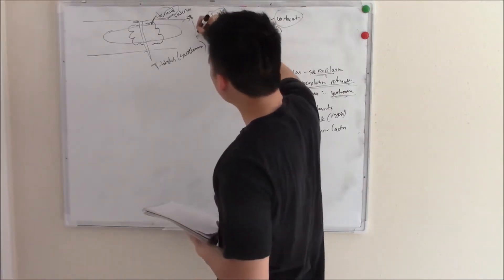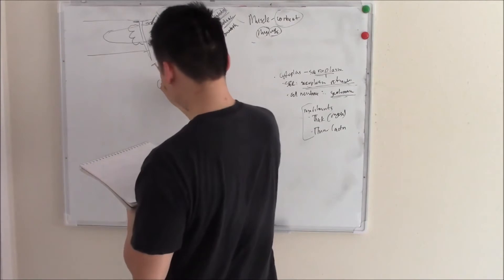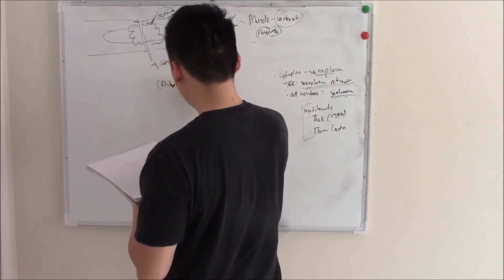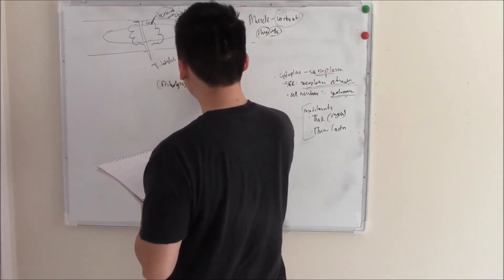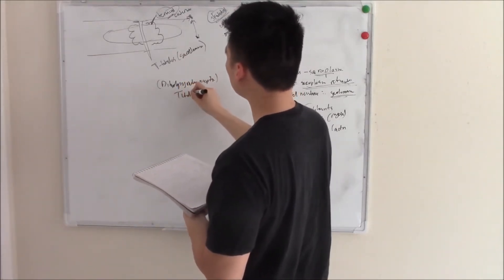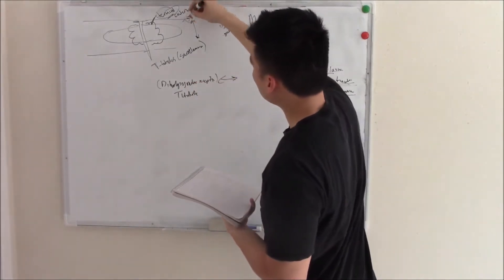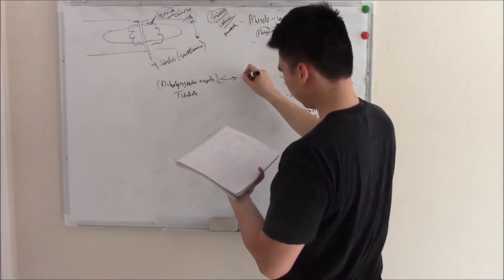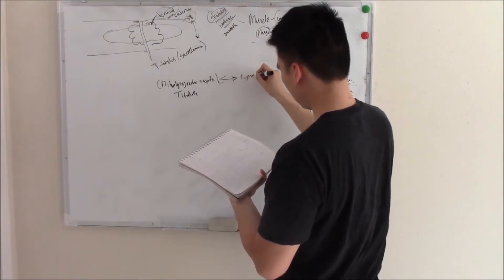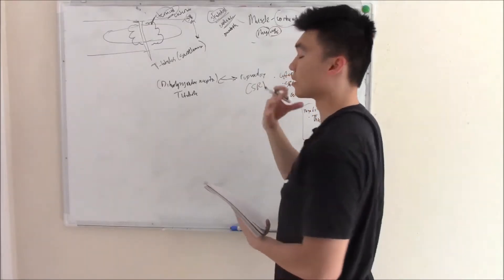These two can communicate with each other. In your T-tubule, you have dihydropyridine receptors that communicate with the sarcoplasmic reticulum via ryanodine receptors.